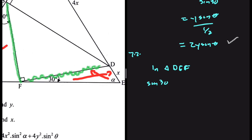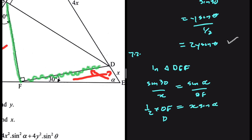Sine of 30 divided by X equals sine of alpha divided by DF. Cross-multiplying: sine of 30 is one-half, so one-half times DF equals X sine of alpha. Dividing both sides by one-half, we get DF equals 2X sine of alpha. So we have the size of DF in terms of alpha and X.